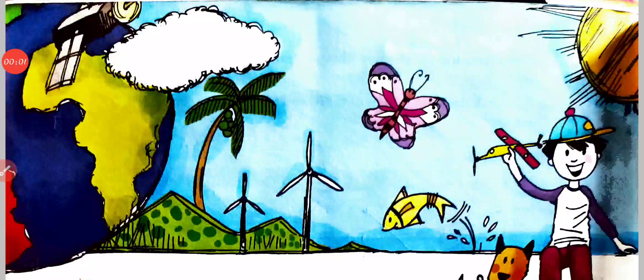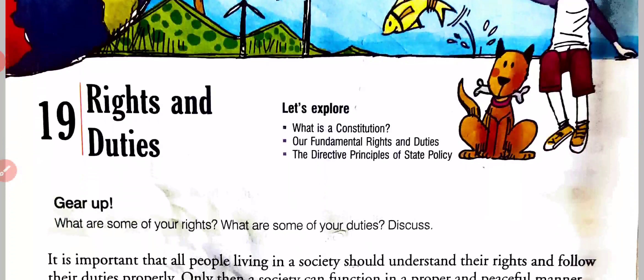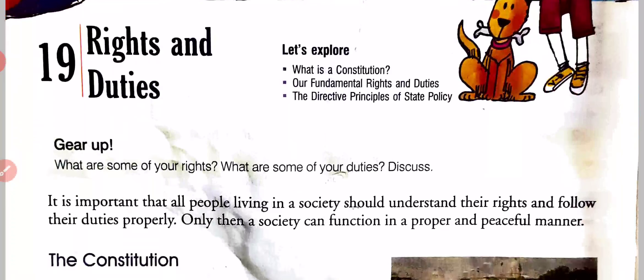Hello students, welcome to Subhash Chandra Academy e-learning classes. Hope you all are doing well. Today I will start your chapter number 90, Rights and Duties — Adhikar aur Kartavya.